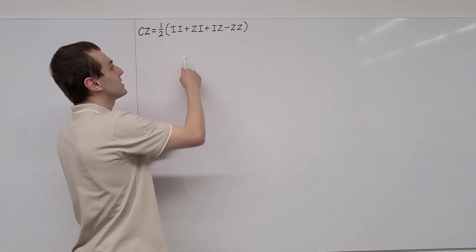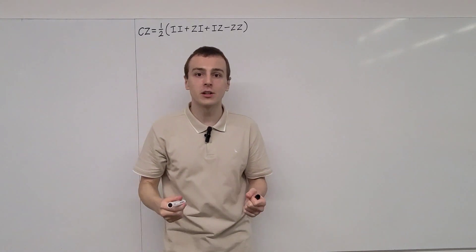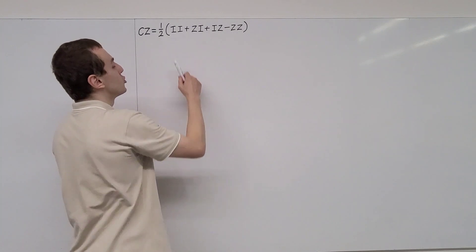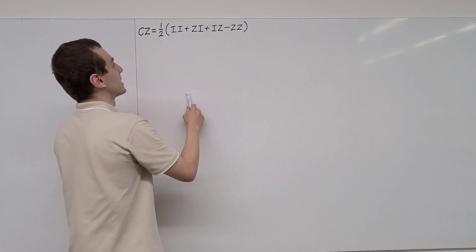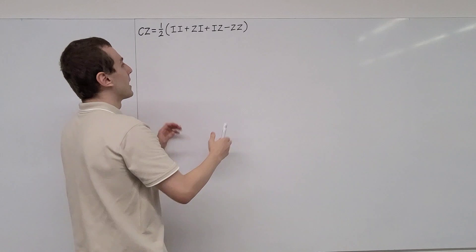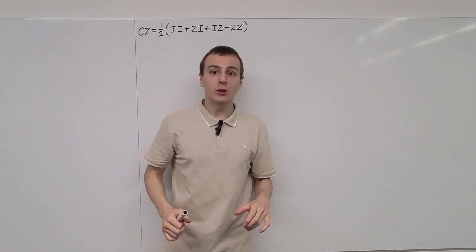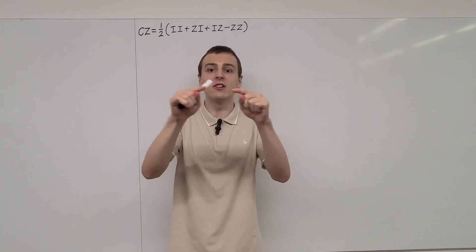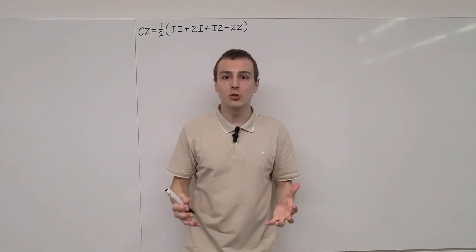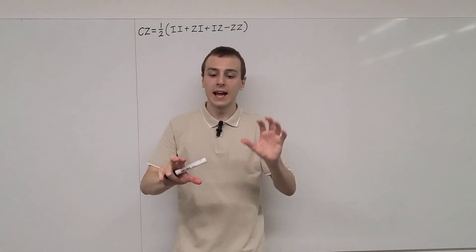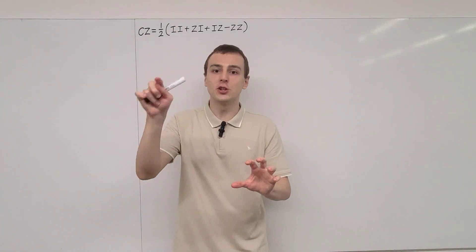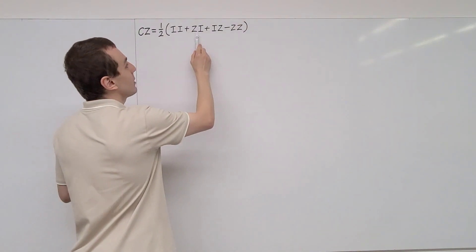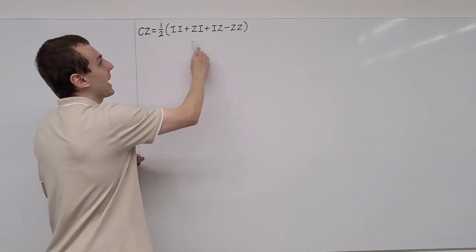This notation is shorthand notation for the tensor product of two matrices. I and Z are both 2x2 matrices — they are single qubit gates. But if we take two separate 2x2 matrices and apply the tensor product, we can combine them into a 4x4 matrix. A 4x4 matrix can be divided up into four quadrants, each of which is a 2x2 matrix. What is really convenient about these Pauli matrix tensor products is that they are diagonal.